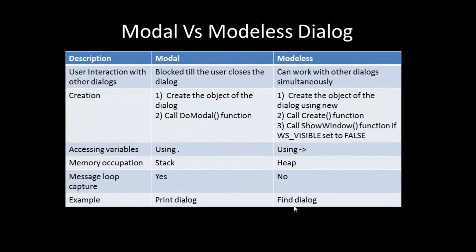Now, how do you create these two dialogs? In case of a modal dialog, you create the object of the dialog and call the DoModal function. In case of a modeless dialog, you create a pointer object using 'new', then call the Create function, and then call ShowWindow if you haven't set the WS_VISIBLE flag in the Create call. For accessing variables: in modal you use dot notation, in modeless you use a pointer.